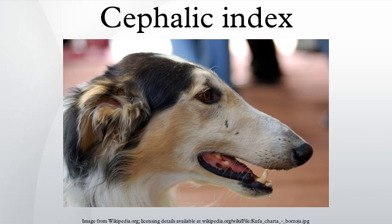Ralph Holloway of Columbia University argues that the new research raises questions about whether the variations in skull shape have adaptive meaning and whether, in fact, normalizing selection might be at work on the trait, where both extremes — hyperdolichocephaly and hyperbrachycephaly — are at a slight selective disadvantage.